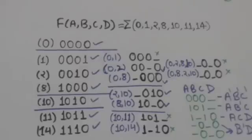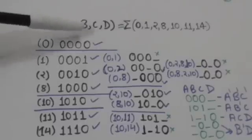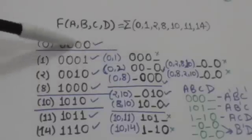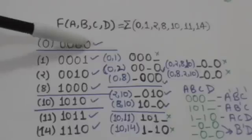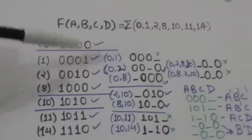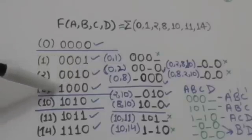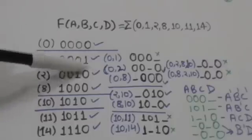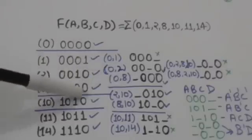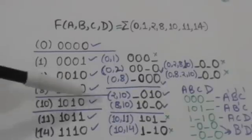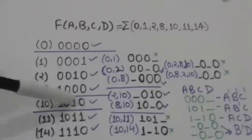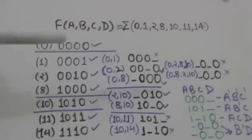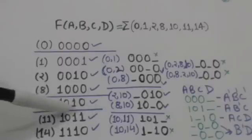This binary representation of minterm m0 has no ones, so it is in a separate group. The binary representations of m1, m2, and m8 have only a single one, so they are in a different group. The binary representation of m10 has two ones, so it is in its own group. The binary representations of m11 and m14 have three ones, so they are in another group.